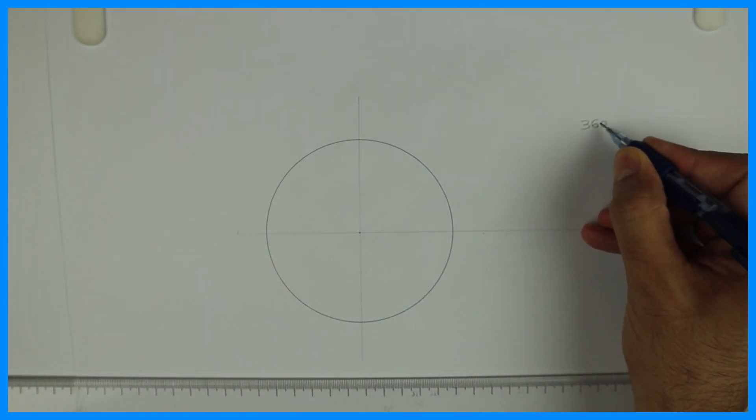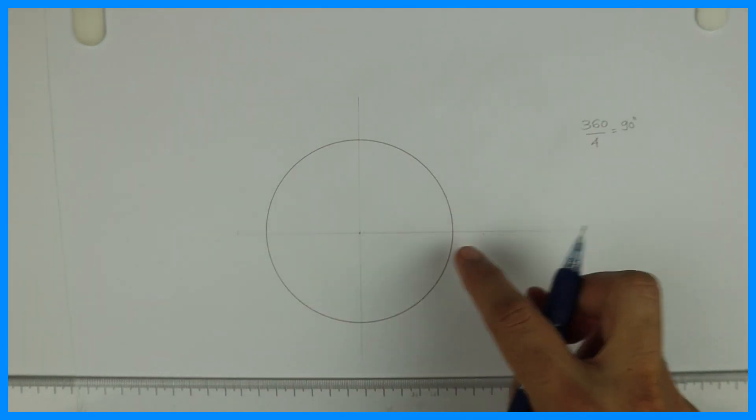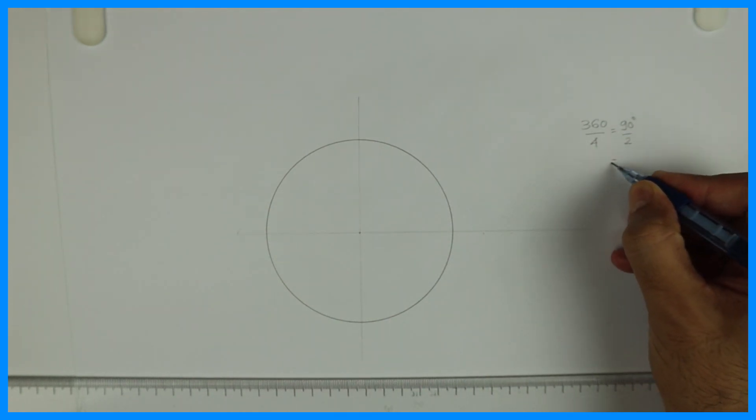360 divided by 4 would be 90 degrees. 90 divided by 2, we'll take 90 divided by 2 would be 45 degrees, so I need to use 45 degrees.